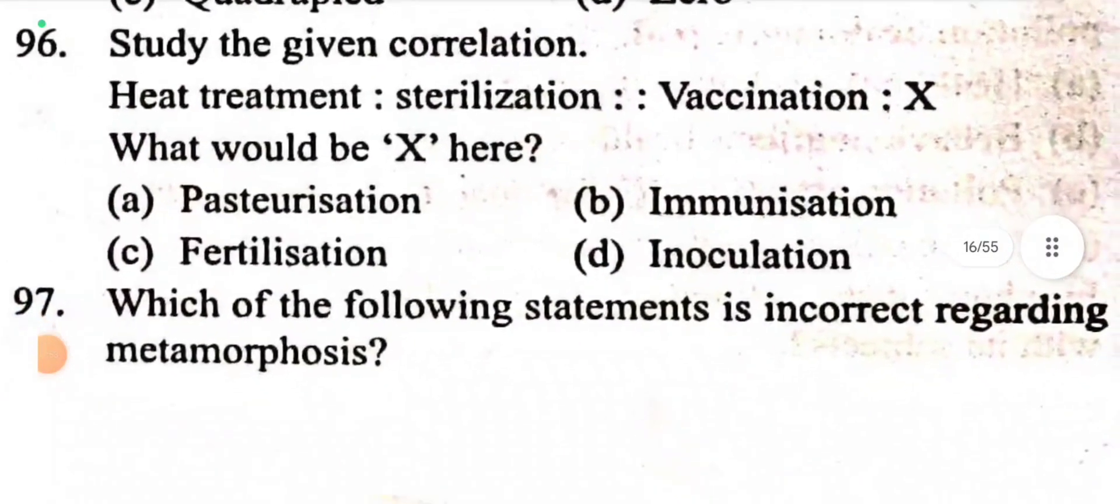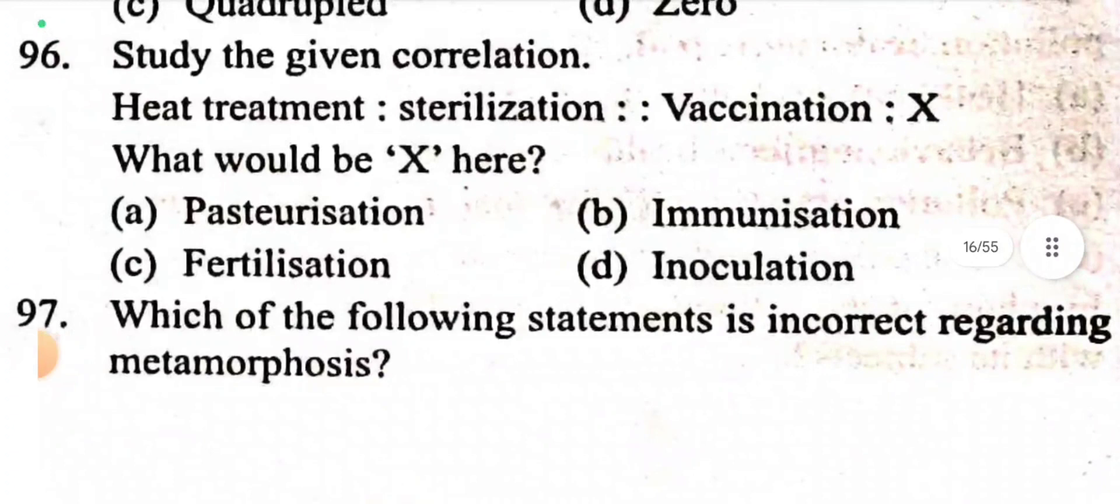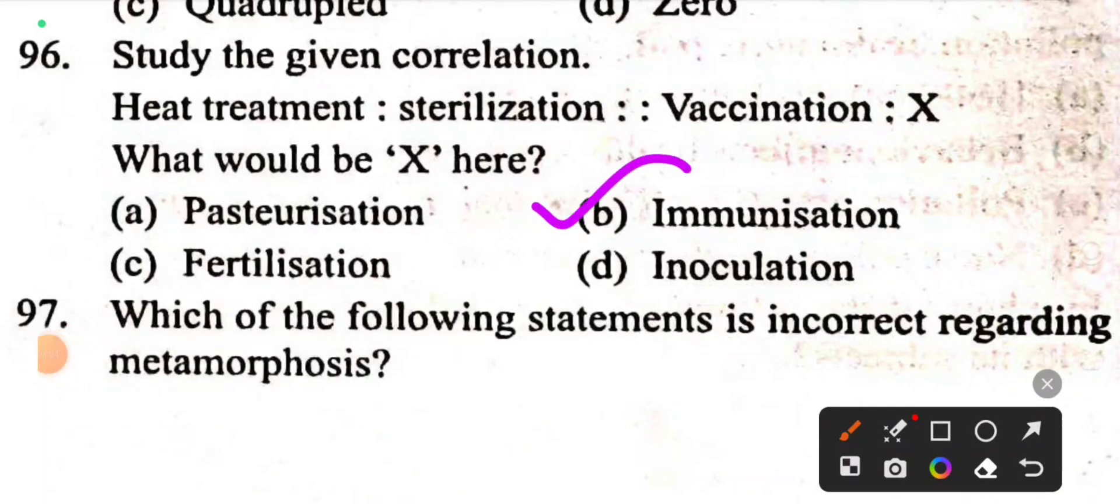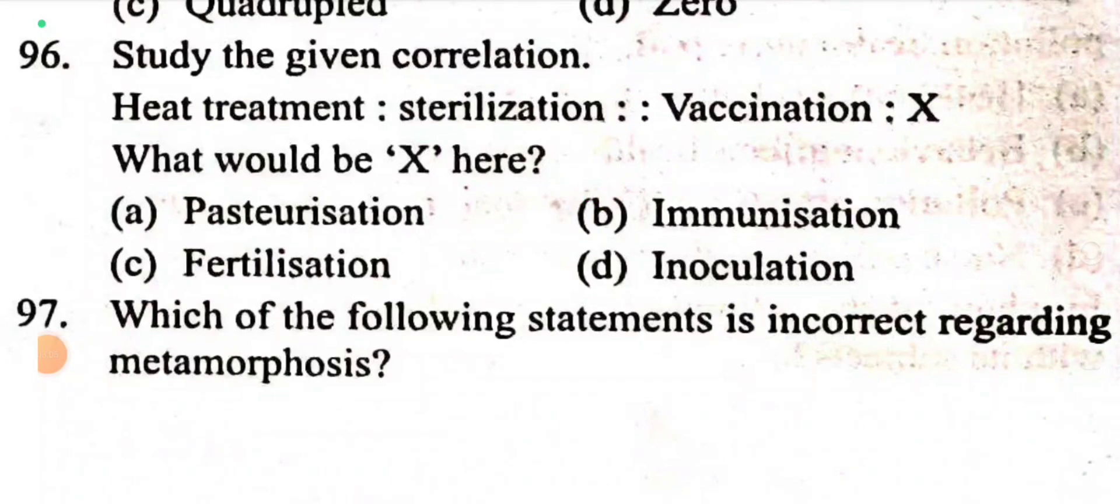Question 96: Study the given correlation. Heat treatment leads to sterilization. Vaccination leads to immunization, which creates immunity.